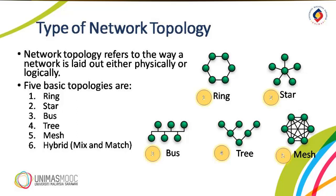The fourth one is the tree topology, which combines the characteristics of a linear bus and a star topology. It consists of groups of star-configured workstations connected to a linear bus backbone cable, as you can see in the figure. Tree topologies allow for the expansion of an existing network and enable schools to configure a network to meet their needs.